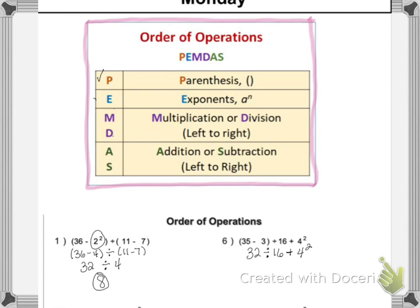So the next step is to look for exponents. I do see exponents with 4 squared, so I'm going to rewrite the problem as 32, divided by 16, plus 4 squared, which is 4 times 4, which is 16.